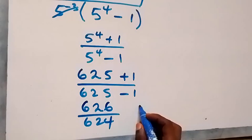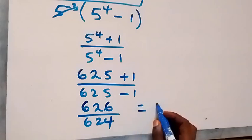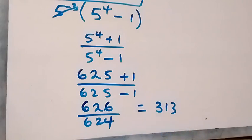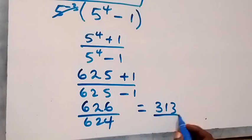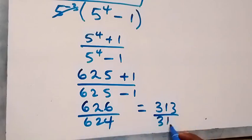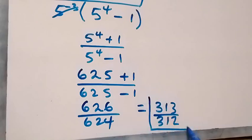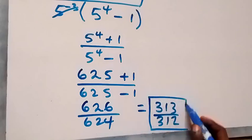When we reduce this, 2 can go into both, giving us 313 divided by 312. And here we have the simplified form of this problem.